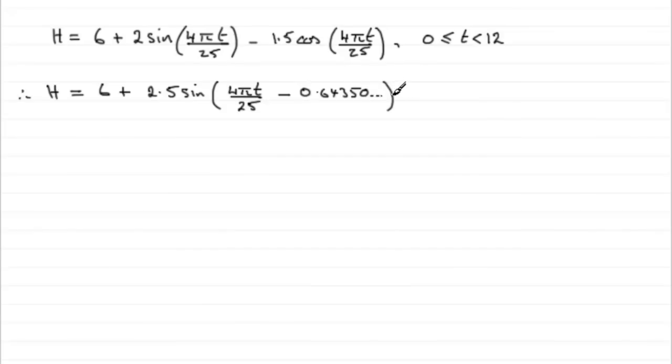Now, maximum value of h. Well, we've got to take the maximum value of this part of the equation, which we found out earlier was 2.5, and then add it to the 6. So clearly then, the maximum value of h is going to be 6 plus 2.5, and that is going to be 8.5. So we've got a maximum height then of 8.5 metres.